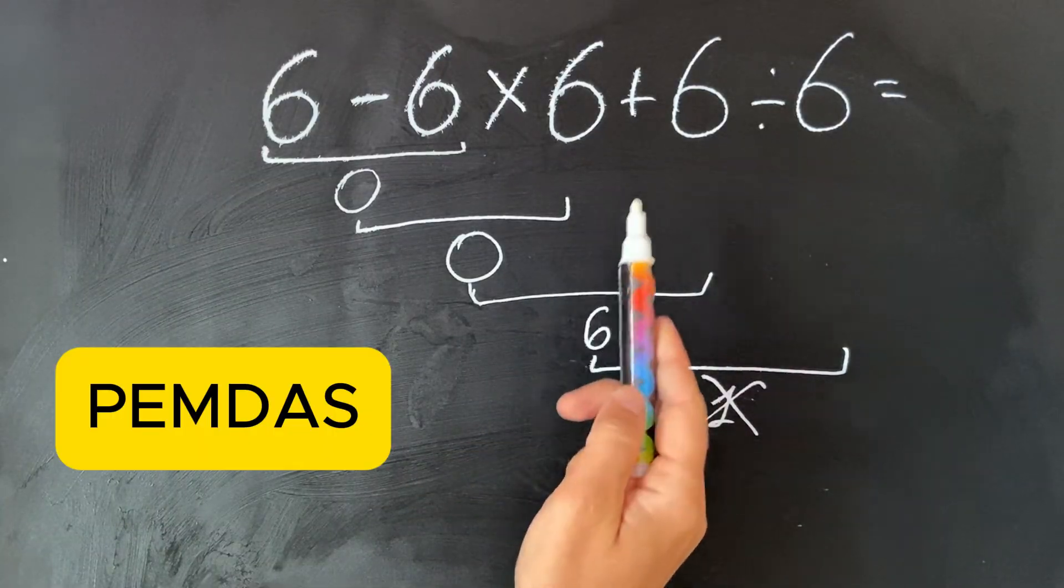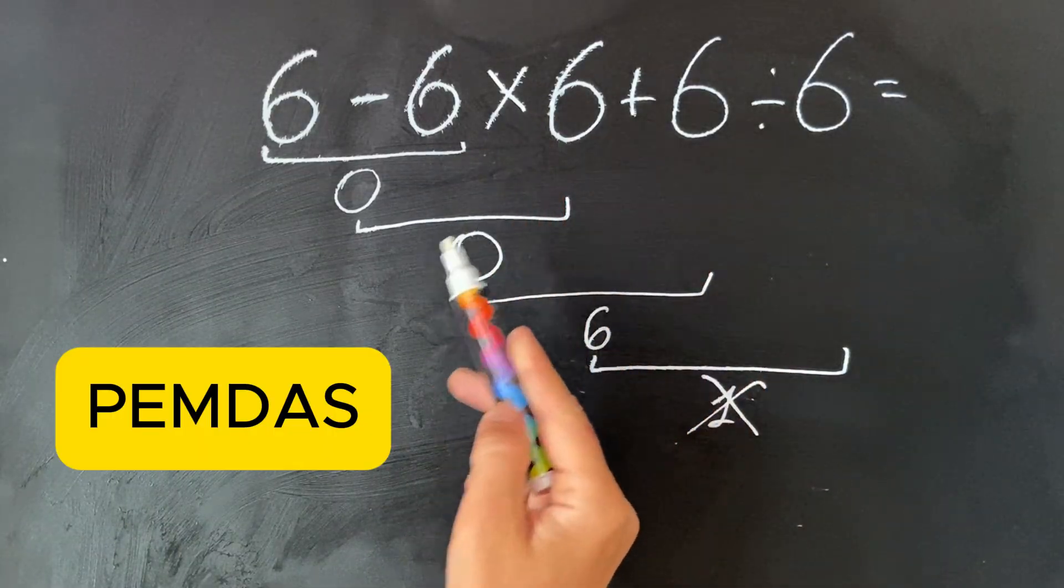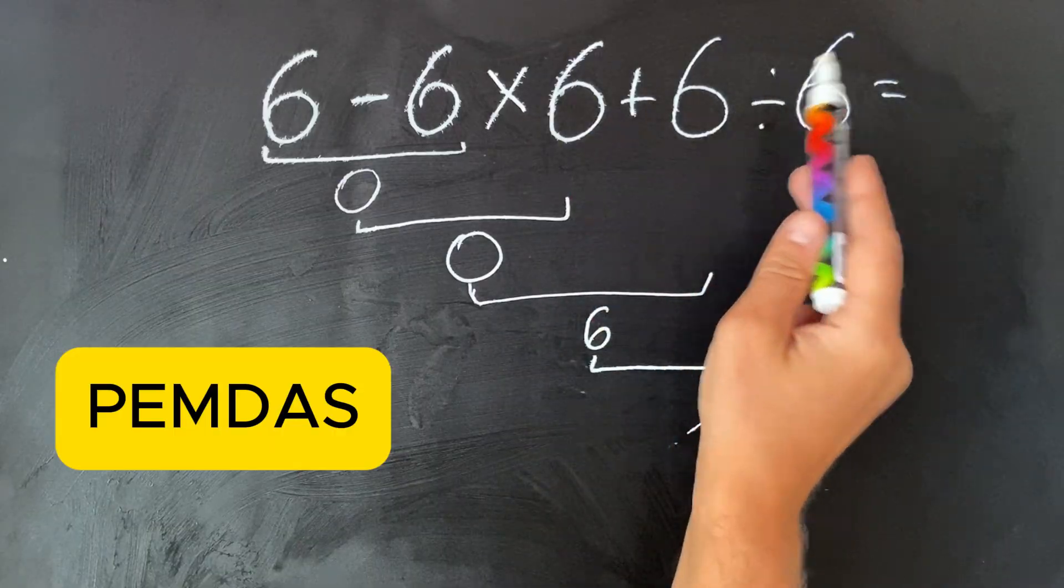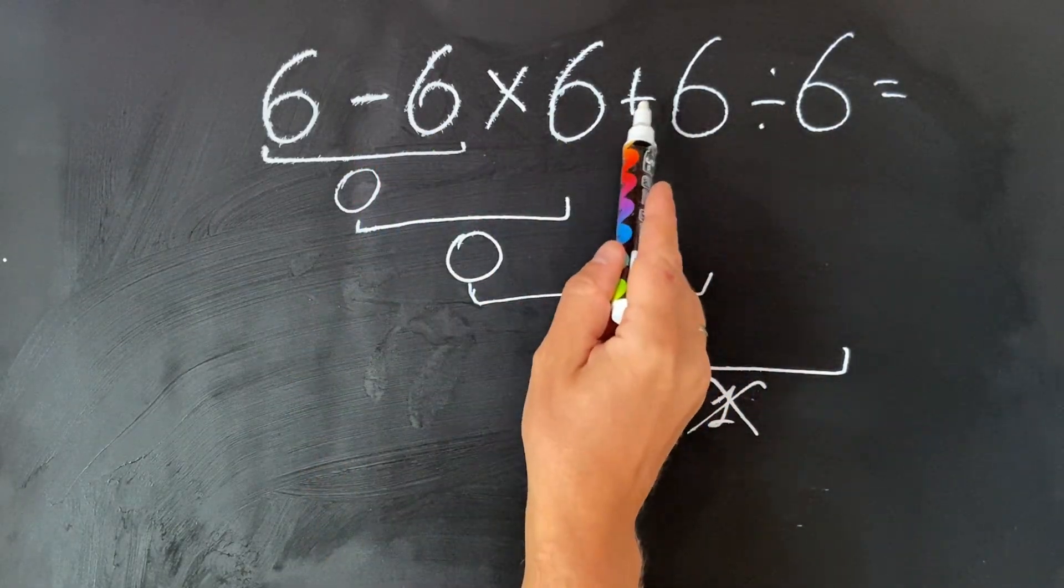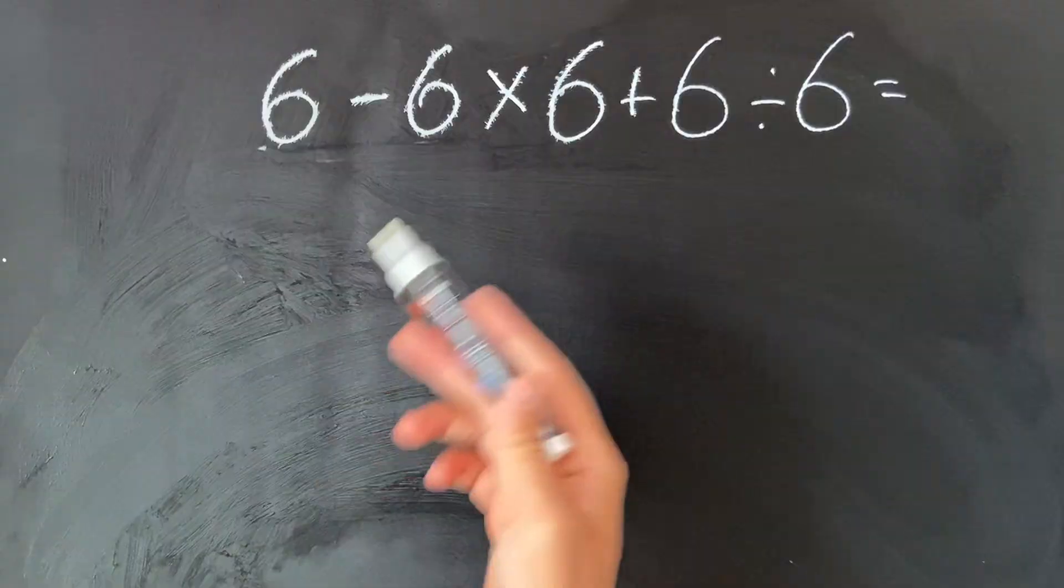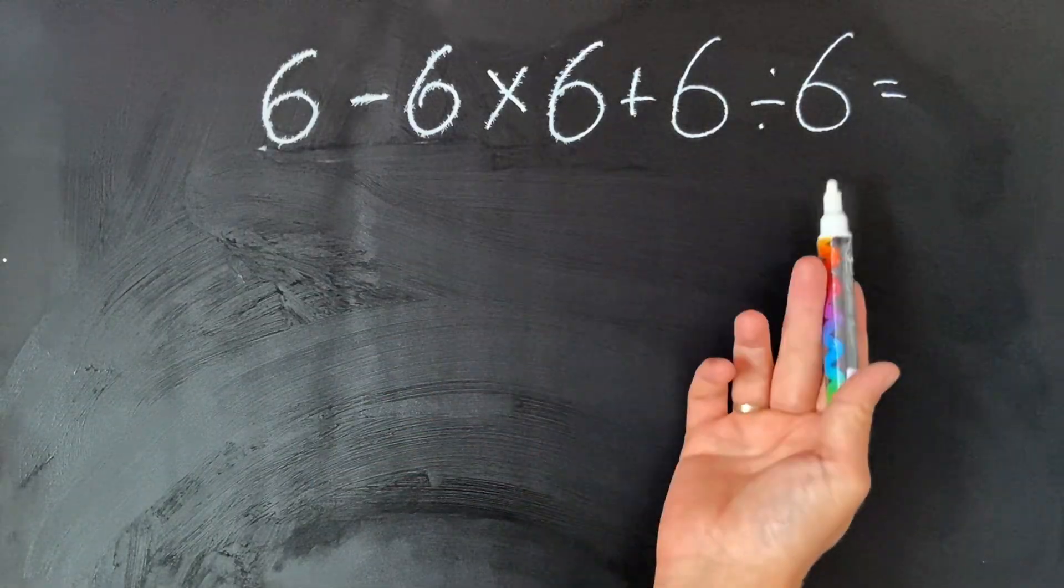follow the PEMDAS rule and the order of operation. In this case, multiplication and division have priority over subtraction and addition, so the correct approach would be to follow the order of operation.